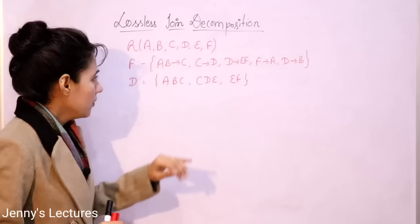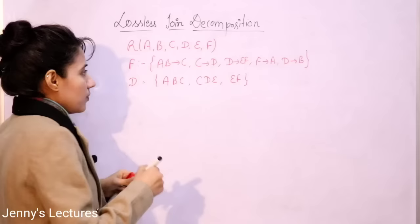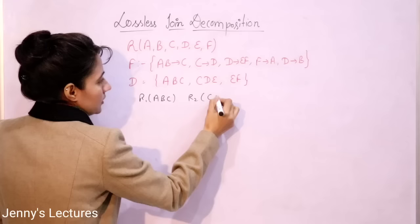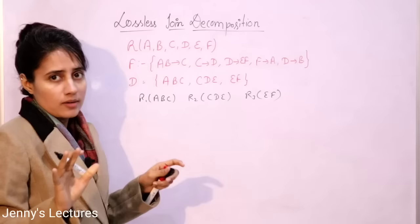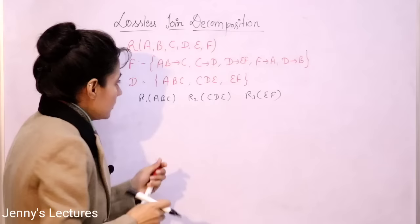Here I have decomposed the relation into three sub-relations. R1 contains attributes A, B, C; R2 contains C, D, E; and R3 contains E, F. Data is not given — functional dependencies are given on this relation. Now check whether this decomposition is lossless join or not.